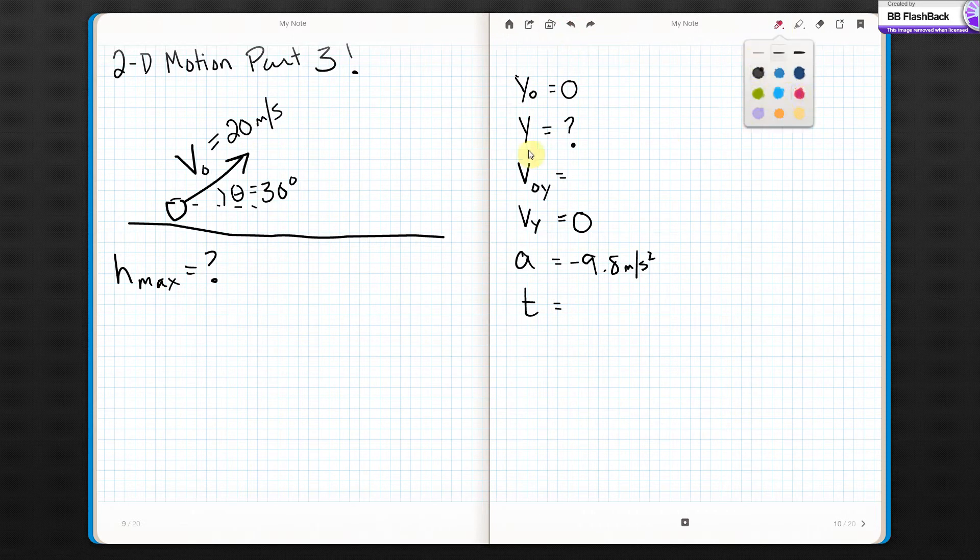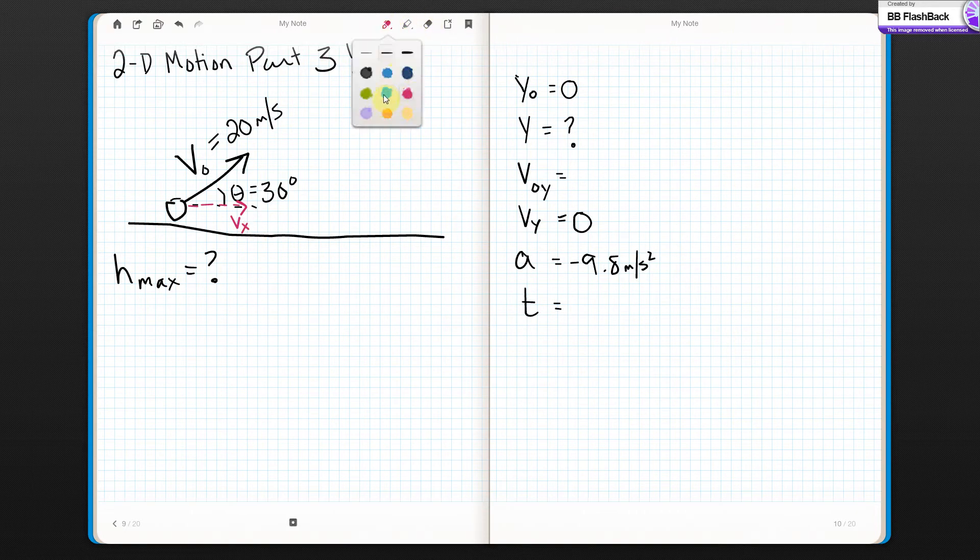I have to break up this velocity into its X velocity and its Y velocity. Sorry, this is so crooked. I don't know why I can't draw straight today. Now, this is the components of V naught, so actually, I should put little zeros on there too. Oh, it's really squished now. I'm sorry. I hope you have a high-definition screen.